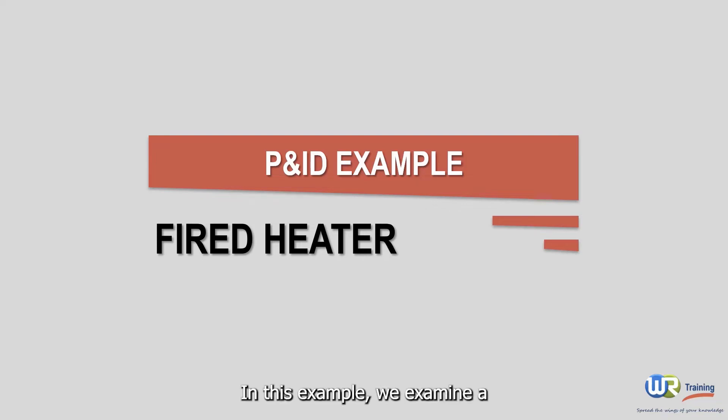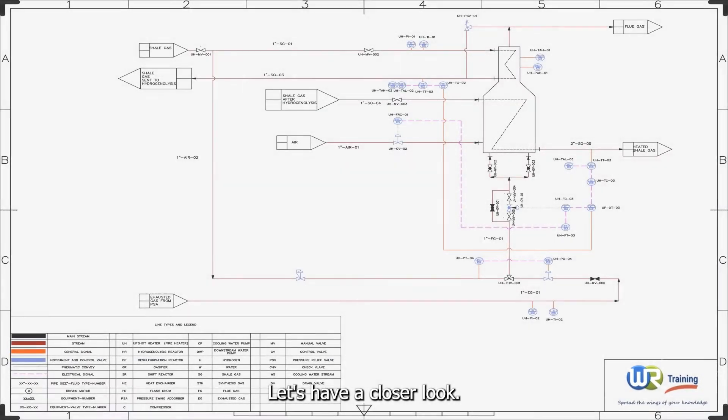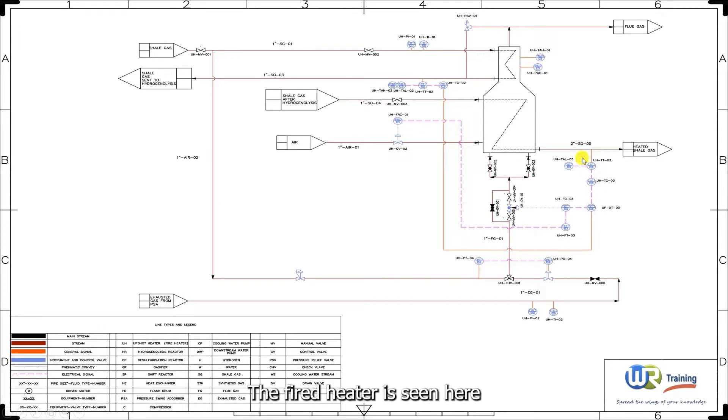In this example, we examine a piping and instrumentation diagram of a fired heater. Let's have a closer look. The fired heater is seen here. It has eight piping connections. Starting our way from top to bottom, the piping system comprises of a flue gas exit pipe.